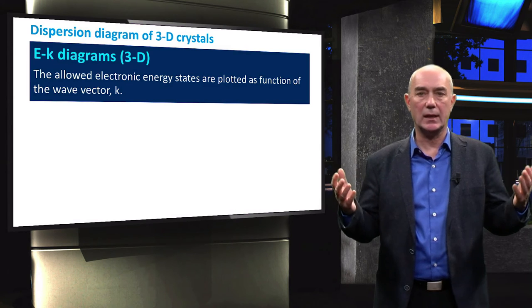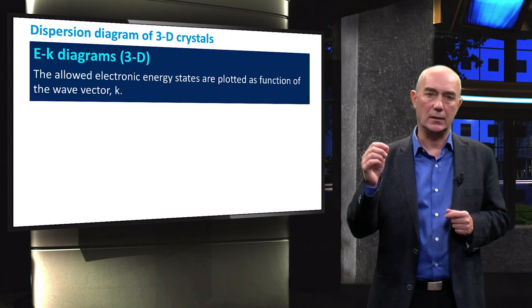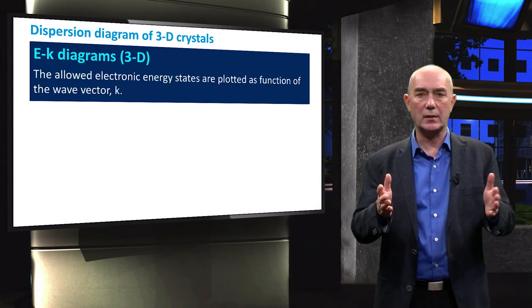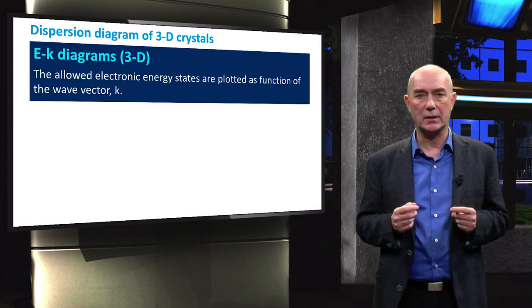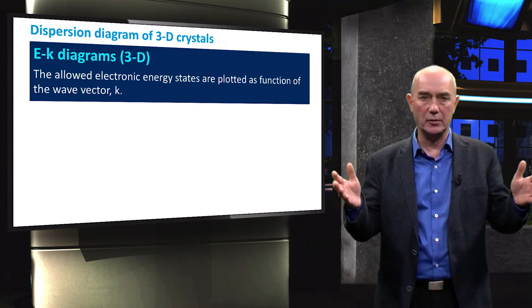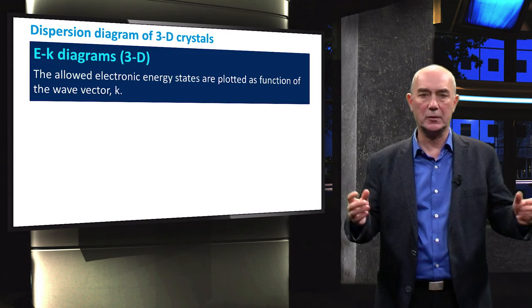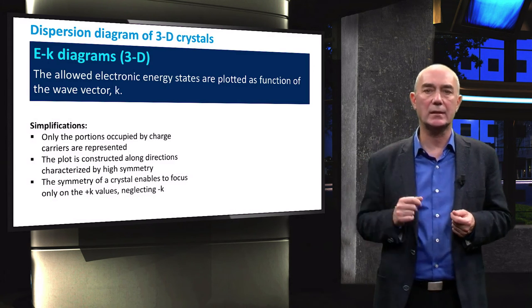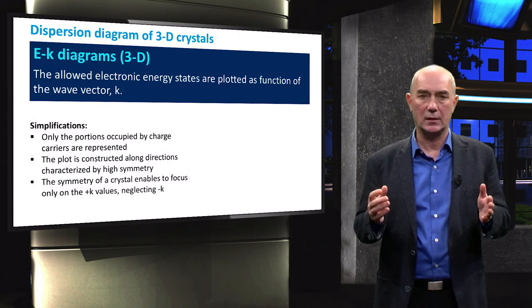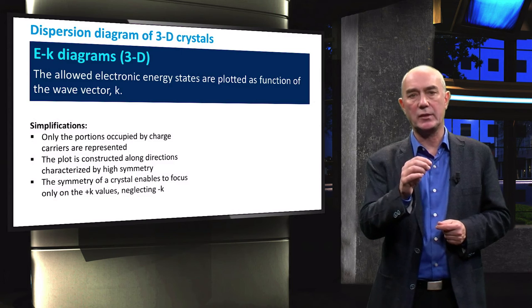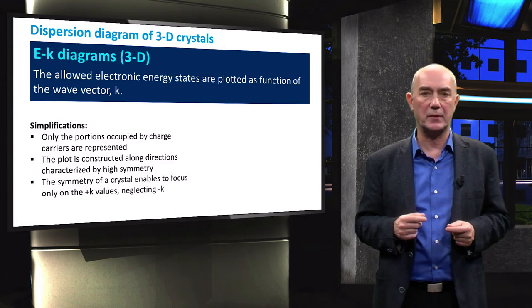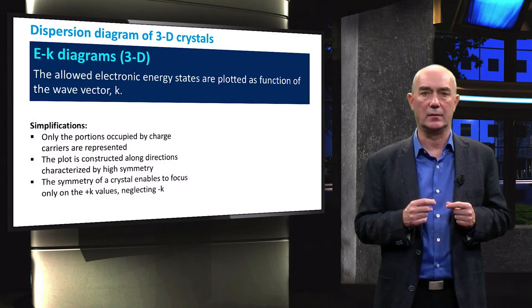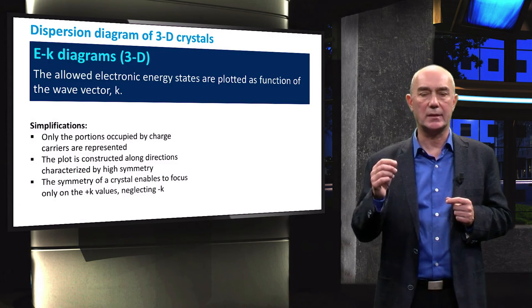We can extend our analysis to a three-dimensional system. In this case, we refer to k as wave vector. It depends on the crystal orientation that has to be taken into account. However, if we do so, the resulting plot will be very complex and difficult to analyze. For this reason, generally only the regions that are most likely to be occupied by electrons are plotted. Moreover, due to the symmetry of crystals, we can choose to plot only the positive values of k.